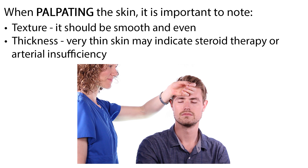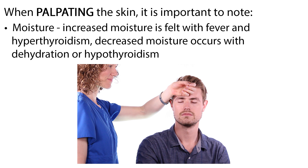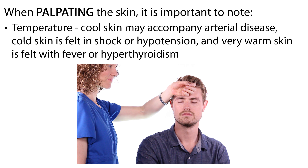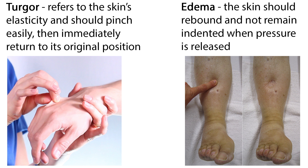When palpating the skin, it is important to note texture — it should be smooth and even. Thickness — very thin skin may indicate steroid therapy or arterial insufficiency. Moisture — increased moisture is felt with fever and hyperthyroidism; decreased moisture occurs with dehydration or hypothyroidism. Temperature — cool skin may accompany arterial disease, cold skin is felt in shock or hypotension, and very warm skin is felt with fever or hyperthyroidism. Turgor refers to the skin's elasticity and should pinch easily, then immediately return to its original position. Edema — the skin should rebound and not remain indented when pressure is released.